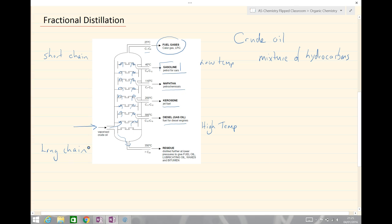The process vaporizes the gases, and the gases are then cooled and they condense at different boiling points, with the shorter chain hydrocarbons making it further up the fractional distillation column.